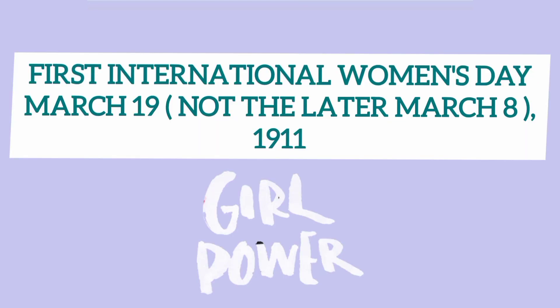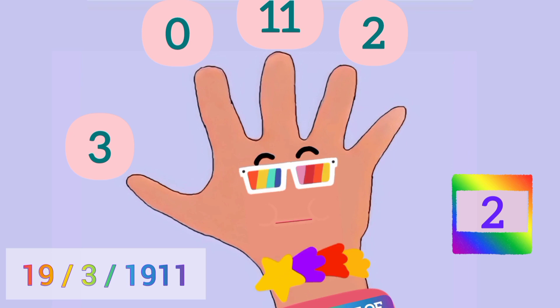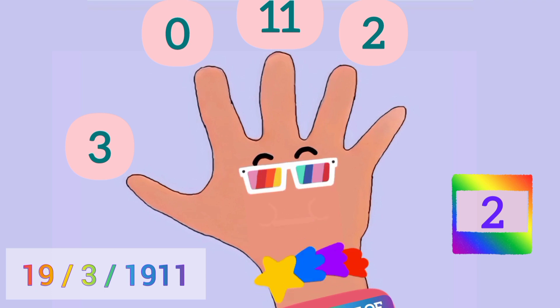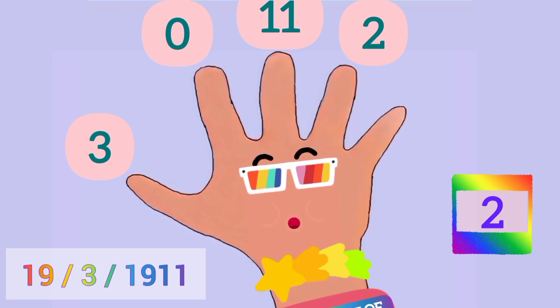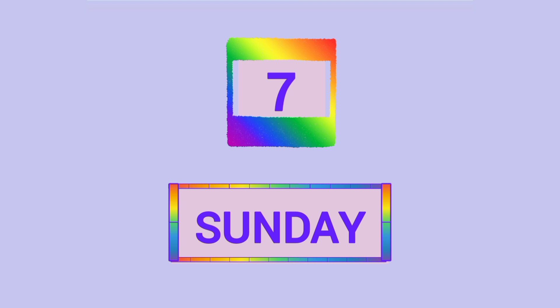Let's do one more: 19th of March, 1911 — the day of celebration of the 1st International Women's Day. Doomsday for century 1900 is 3. The difference is 11; the number of 12s in 11 is 0. The remainder is 11. The number of 4s in the remainder 11 is 2. Adding: 11 and 3 add up to 14, which is 2 times 7 — removed. We are left with 2. Thus, doomsday for 1911 is 2. Now, the 19th of March is 5 days after the 14th of March (Pi Day), so doomsday for 19th of March is plus 5. 2 plus 5 equals 7, which equals 0.